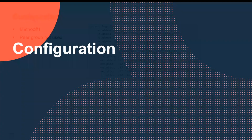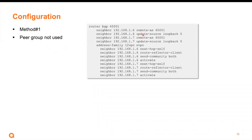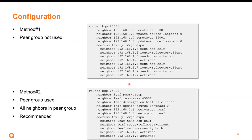Configuration-wise, there are two methods. The first method, where you do not use a peer group, specifies individual access VTAPs and sets next hop self individually. But method two, where you use a peer group, is recommended — you have all neighbors in the same peer group. For example, neighbors 1.6 and 1.7 are in the same leaf peer group, and you just need to have next hop self in that peer group. This is recommended because typically this border route reflector VTAP will have many, many neighbors at the access layer.